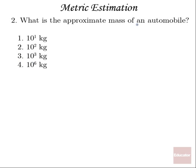Number two, the approximate mass of an automobile? Well, 100 kilograms, that's about the mass of a pretty big person. 10 to the 6 kilograms, that's humongous. Let's go with 10 to the 3rd kilograms, about 1,000 kilograms, or on the order of 2,000 pounds.